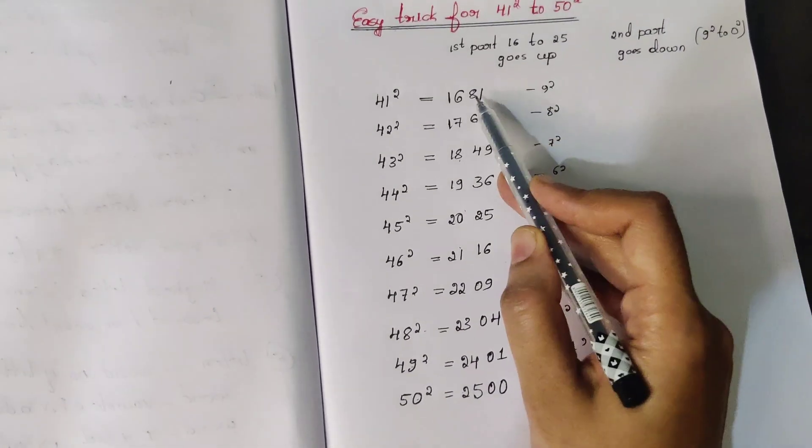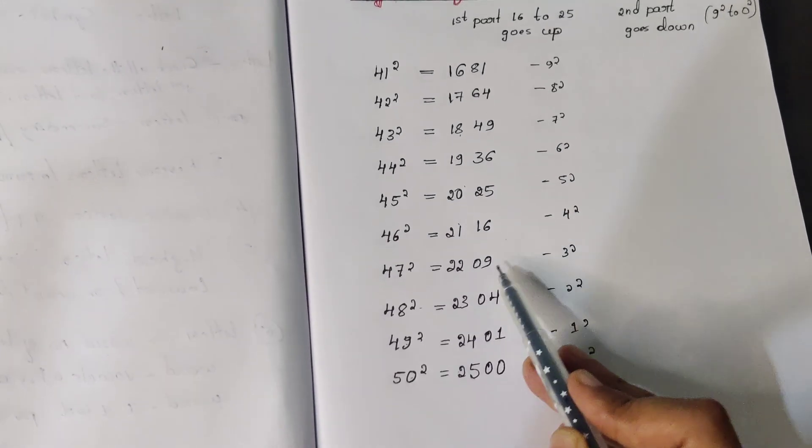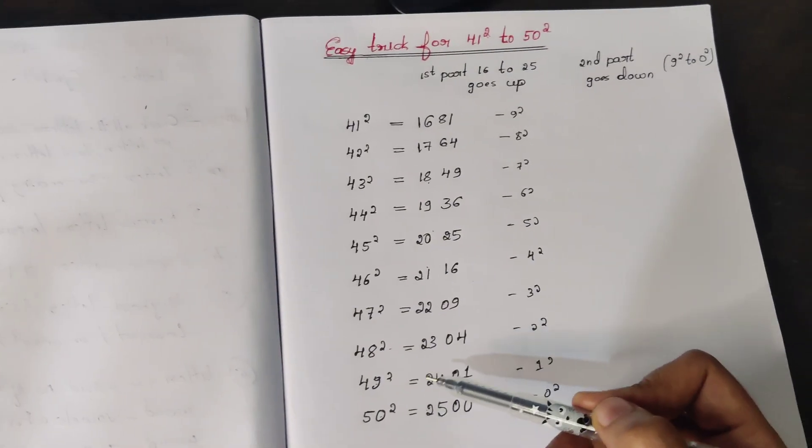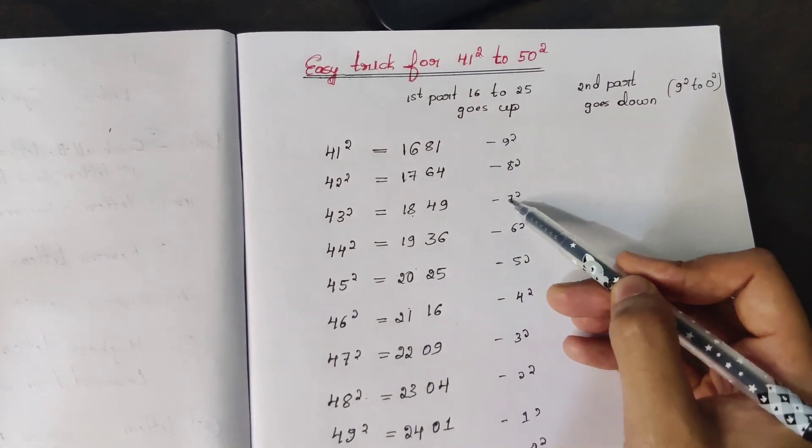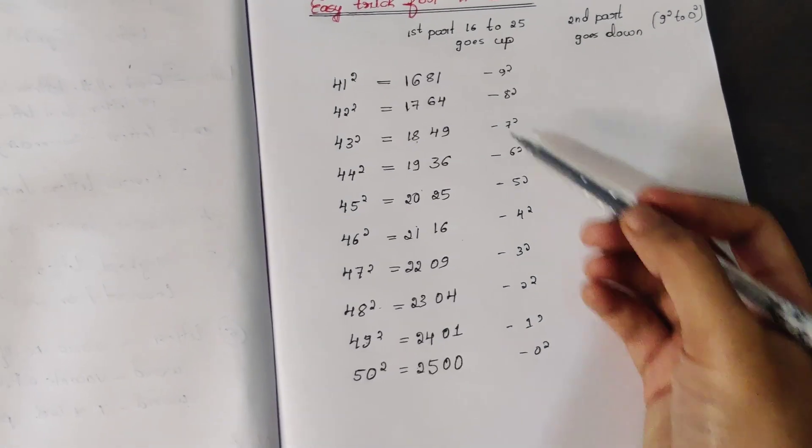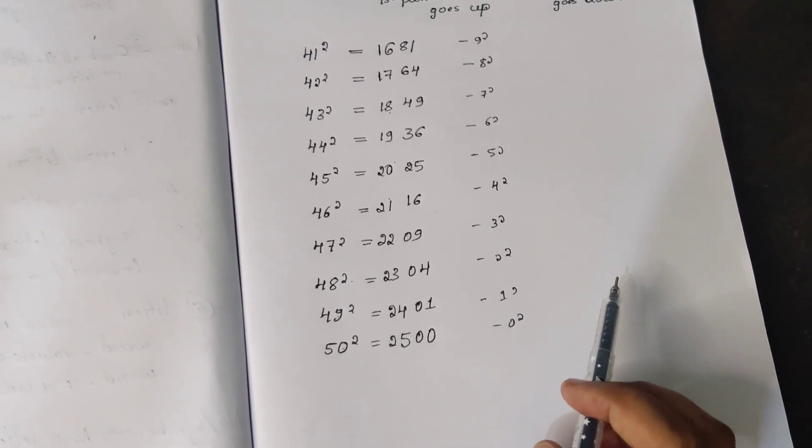81, 64, 49, 36, 25, 16, 09, 04, 01, 00. It is actually the square of 9, 8, 7, 6, and so on, just written in reverse order. So if you put them together, you will